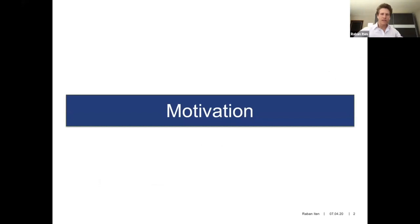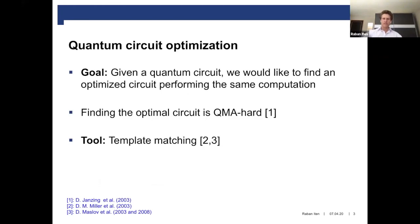The motivation of the project is the following. If you have given a quantum circuit, you would like to find a simpler quantum circuit — one that is cheaper to implement on an experimental architecture — but which is performing the same operation. We consider the cost measure of the number of gates, and we would like to find a circuit that minimizes the number of gates.